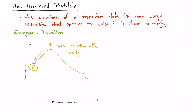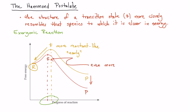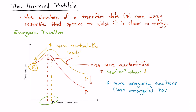Now let's consider what happens to the transition state if we do something to the reaction that lowers the energy of the products — that is, we make the reaction even more exergonic. The transition state in this case is going to be even more reactant-like than before. We can see this by comparing the positions of the two transition states along the x-axis of the reaction coordinate: the second reaction's transition state occurs a bit earlier. So by making the reaction more exergonic, we get an even more reactant-like, earlier transition state. More exergonic reactions — or equivalently, less endergonic reactions — have earlier and lower energy transition states.